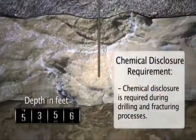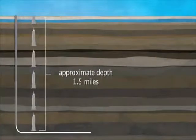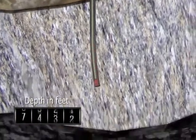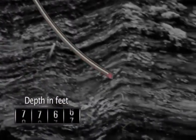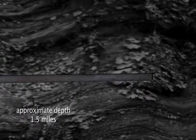The completed well will be drilled up to one and a half miles below the ground surface. This distance is equal to nearly five and a half Empire State buildings stacked on top of one another. At this point in the drilling process, numerous layers and thousands of feet of impermeable rock separate the freshwater aquifers and ground surface from the end of the wellbore.